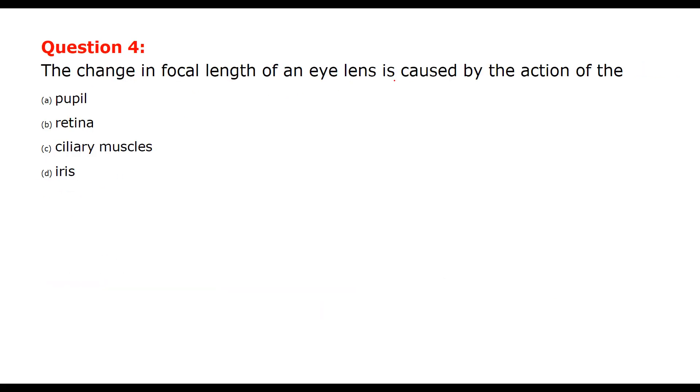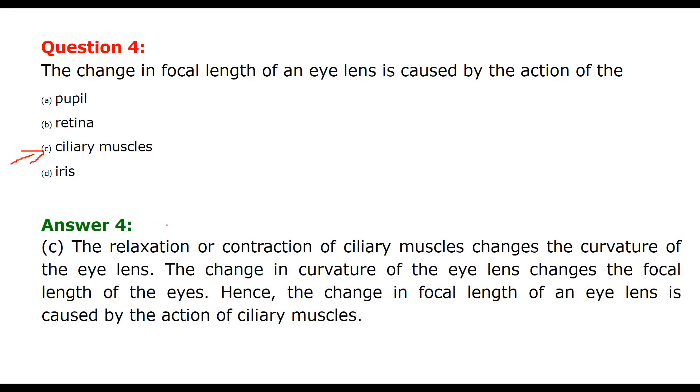The change in focal length of an eye lens is caused by the action of ciliary muscles. The relaxation and contraction of the ciliary muscles change the curvature of the eye lens, and the change in curvature of eye lens changes the focal length of the eyes. That is why the change in focal length of an eye is the consequence of the action of ciliary muscles.